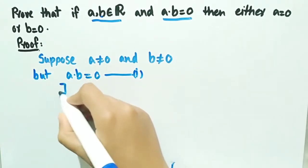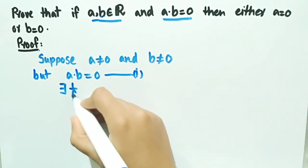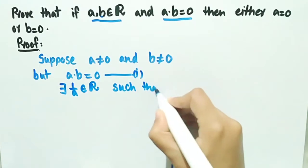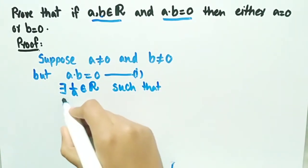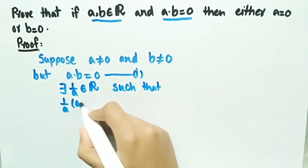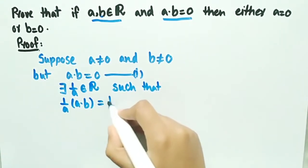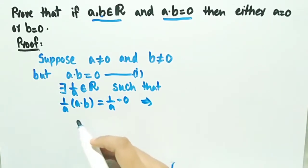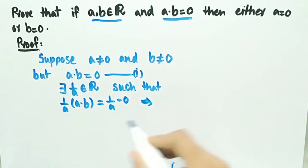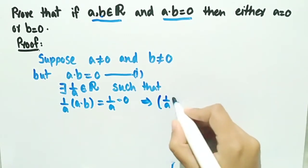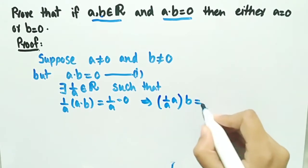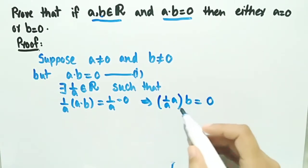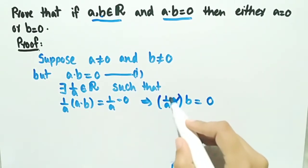Since a is non-zero, there exists a multiplicative inverse of a, that is (1/a), belonging to real numbers. When we multiply (1/a) with equation one, we get (1/a) · a · b = (1/a) · 0. We can rearrange it — since multiplication is associative in real numbers — and write it as (1/a · a) · b = 0, since multiplying any real number by zero gives zero.